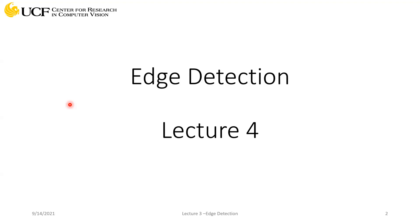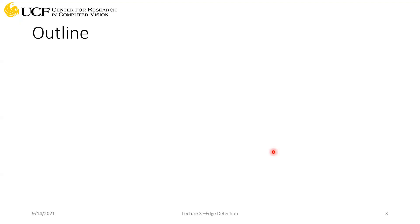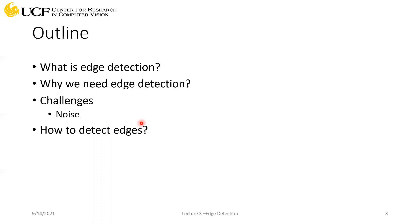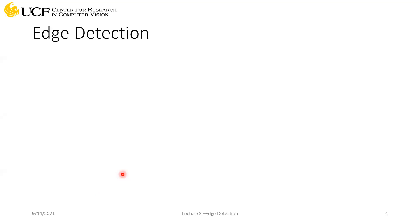Last lecture we talked about filtering, and today we will see how filtering can be used for a very important computer vision problem: edge detection. The outline for this lecture is: first, what edge detection is; then why it is useful; then a very important challenge when performing edge detection due to noise; and then how we can actually detect edges. We'll cover a range of algorithms — starting with Prewitt, then Sobel, then Marr-Hildreth, and finally Canny edge detection. We'll try to cover Prewitt and Sobel today, and the other two hopefully in the next lecture.